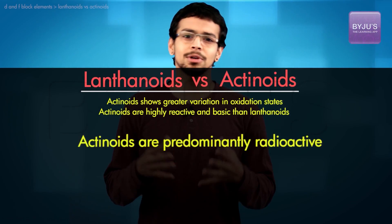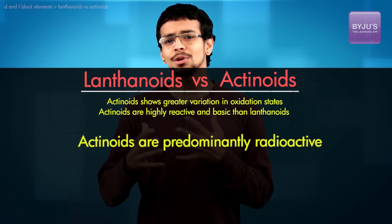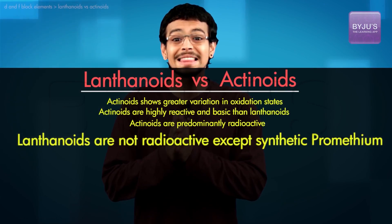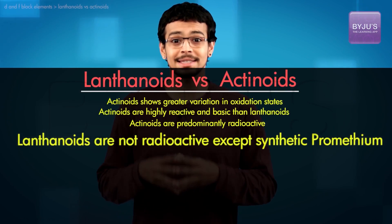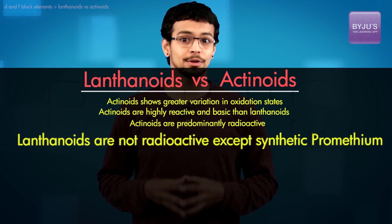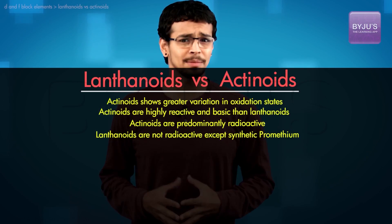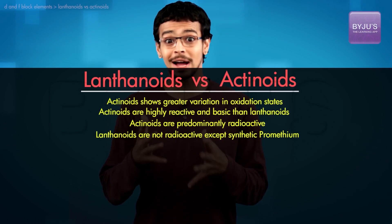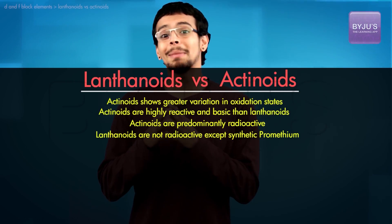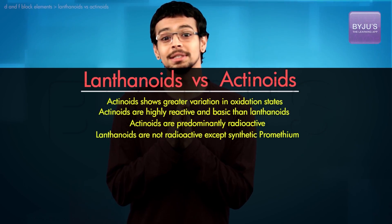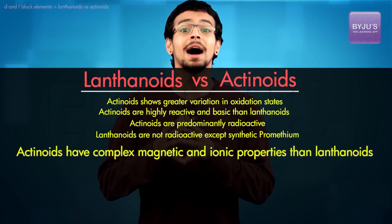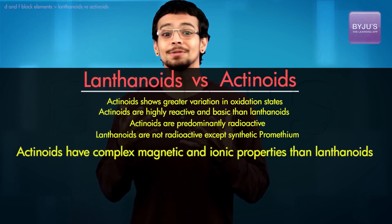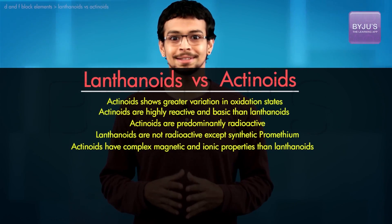Actinoids are predominantly radioactive, whereas only synthetic promethium is a radioactive lanthanoid. Being more complicated elements with relativistic and radioactive effects coming into play, the magnetic properties and the color of ions are much harder to explain for actinoids than for lanthanoids.